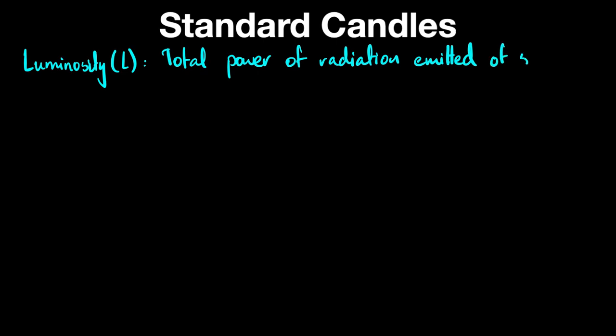We said that luminosity, symbol L, is simply the total power of radiation emitted by a star. We're talking about radiation because a star doesn't just emit light - it emits a continuous spectrum of wavelengths, and we'll talk about that in lectures to come as well.